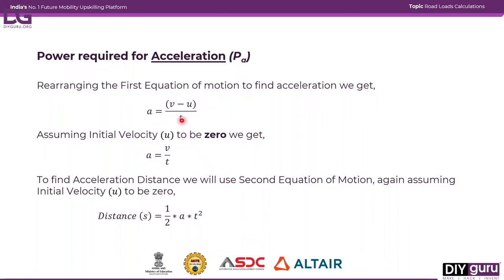Acceleration is different from the other road loads, so its power formula is different. We start by rearranging the first equation of motion to find acceleration. Assuming initial velocity is zero, acceleration equals final velocity divided by time. To find acceleration distance, we use the second equation of motion, which becomes s = ½ × a × t² with zero initial velocity.